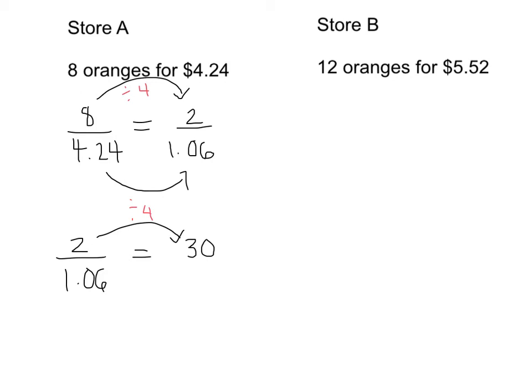How can we use division to help us find this missing number? How many times does 2 go into 30? 30 divided by 2 is equal to 15. The opposite of division is multiplication. So if I multiply 2 times 15, I'm going to get an answer of 30.